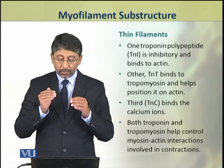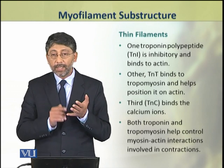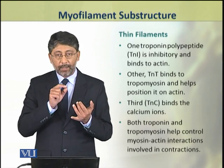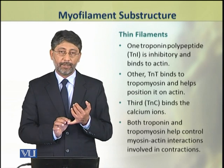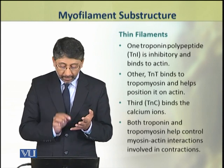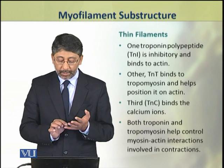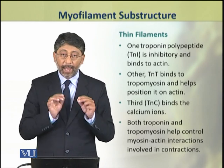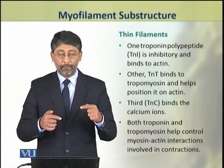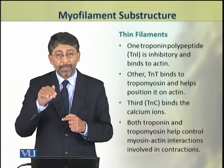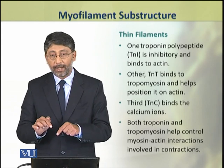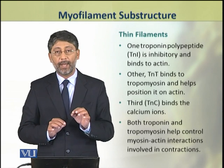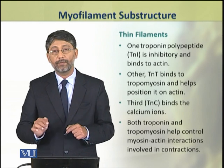Troponin is not continuous but is present at intervals of about 40 nanometers along the length of thin filaments. The troponin complex has three different types of polypeptides: TNI, which is inhibitory and binds to actin; TNT, which binds with tropomyosin and helps to position it on the actin; and TNC, which binds with calcium ions.